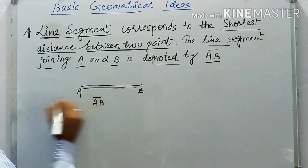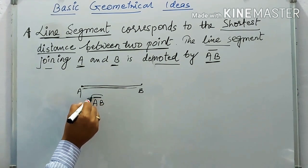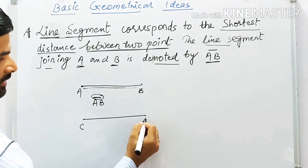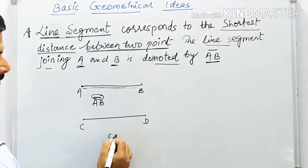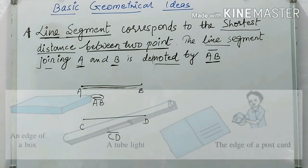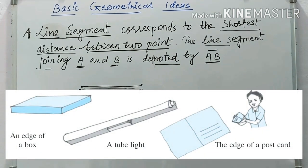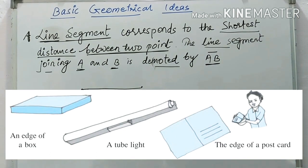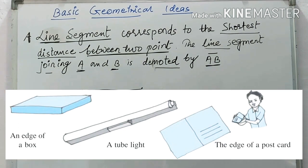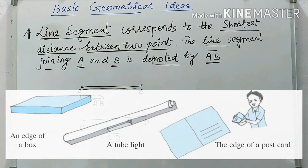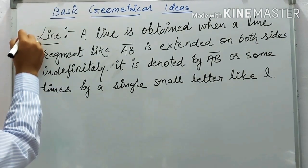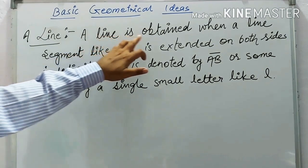This is called line segment AB, and we use the line segment symbol over AB. Similarly, the line segment joining point C and point D is written as CD with the line segment symbol. Three examples are: an edge of a box, two plates, and the edge of a postcard.